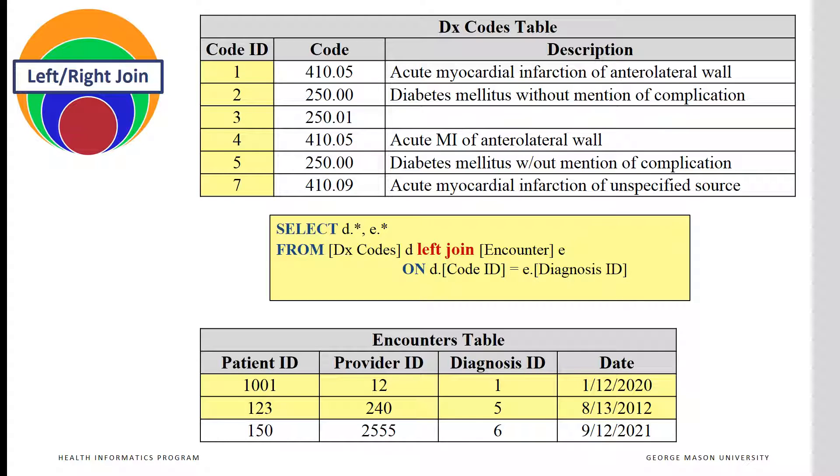The combined table will list all seven diagnoses, very different than the left join or the right join that we discussed before. For diagnoses that have encounters, the encounters are listed. And for diagnoses that do not have encounters, null values are listed.